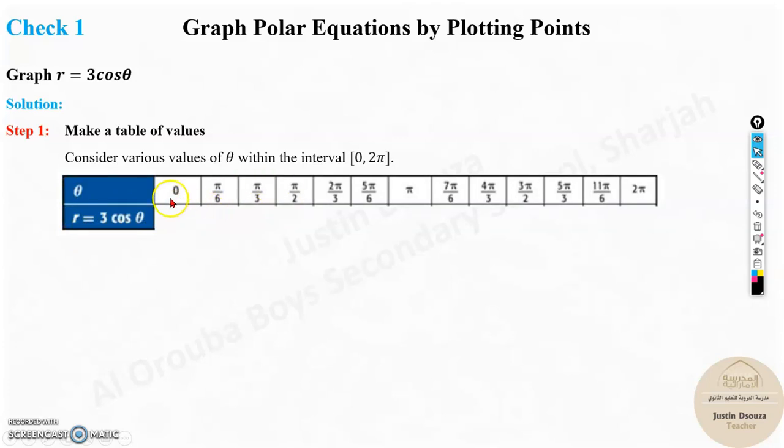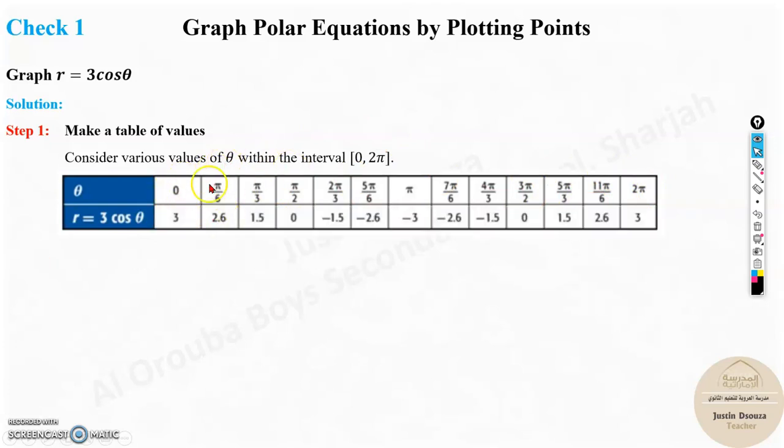I hope you tried it yourself by pausing the video. Now I will tell you the answer. It's like the last problem. Take the intervals from zero to 2π. It's just that theta here. The r is 3cos θ. We take the values from zero to 2π in different intervals. You can take it in degrees like 0, 60, 90, and so on. Then put the values here.